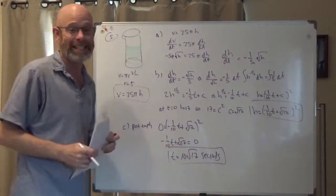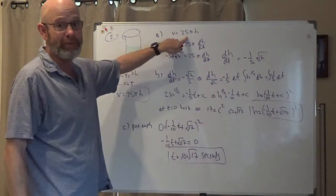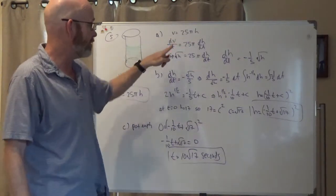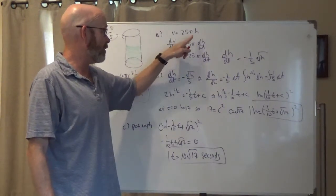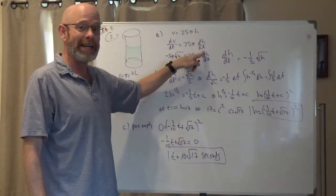They asked me to find dh/dt. So I started with my volume formula, 25 pi h, took the derivatives, related rates problem, dv/dt equals the derivative of this is 25 pi times dh/dt.